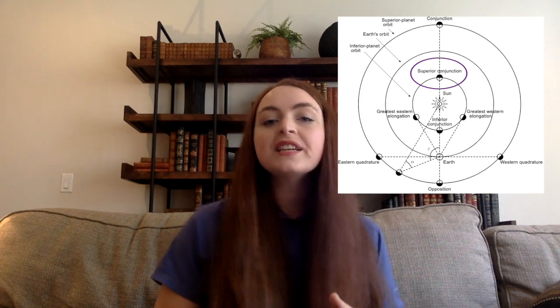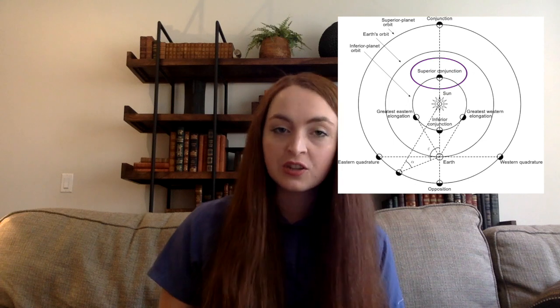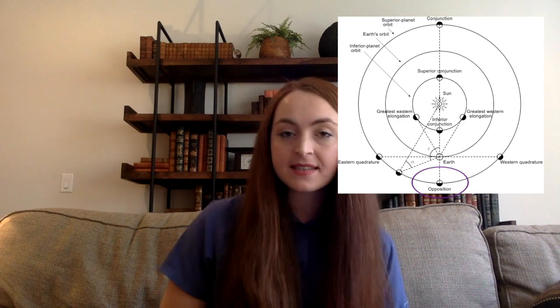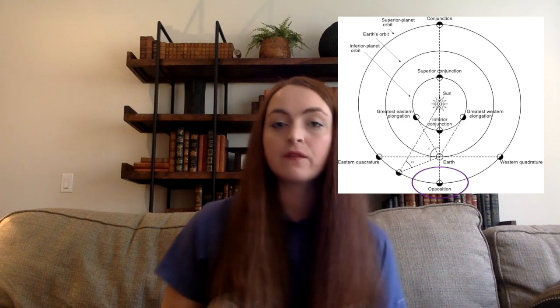Superior conjunction is when the planet is on the other side of the Sun, passing behind the Sun in the sky. Planets further from the Sun than the Earth are only in conjunction in the superior way, since they never pass between the Sun and the Earth, but can be on the opposite side of the Sun from the Earth.